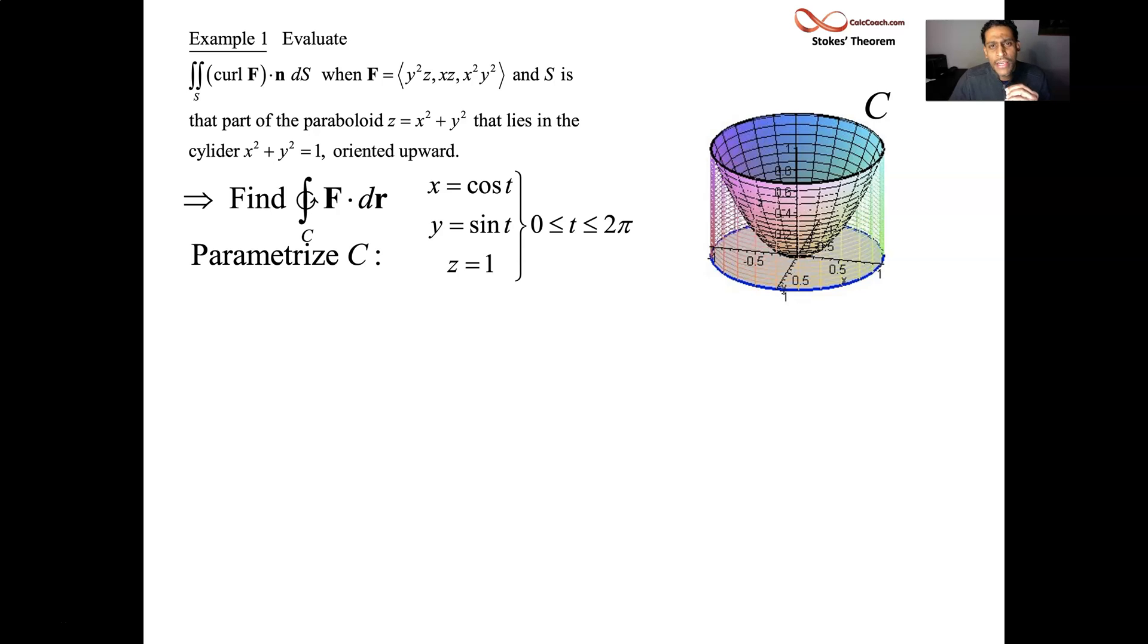And so we have our parametrization. Step one is to get the parametrization, and then you build a vector out of it called r, and then you take the derivative of that vector. That's called dr. So negative sine t and positive cosine t and zero, officially with a dt on it. That's dr.